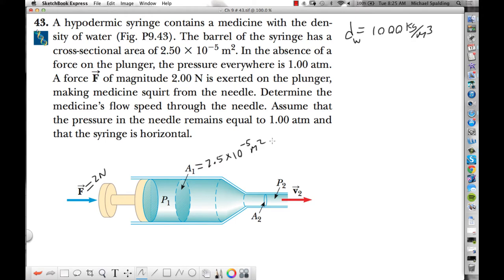Let's see, what else are we given? It says here, in the absence of a force on the plunger, the pressure everywhere is 1 atmosphere. Okay, so when this force is not being applied, the pressure in the fat part and the skinny part is 1 atmosphere without this force, with no force there.